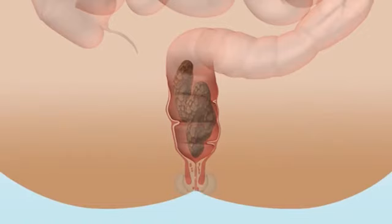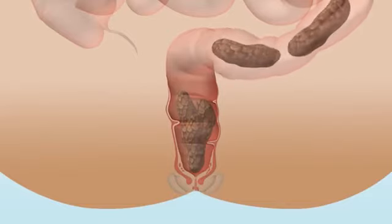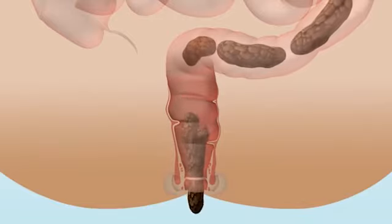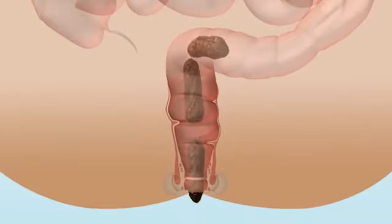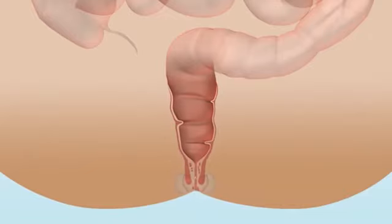At the same time, your internal sphincter relaxes by reflex and stool moves down towards the anus. When you are ready, you consciously allow the external sphincter to relax and stool is expelled. In between going to the toilet, both the internal and the external anal sphincter are contracted to keep you continent and to prevent leakage.